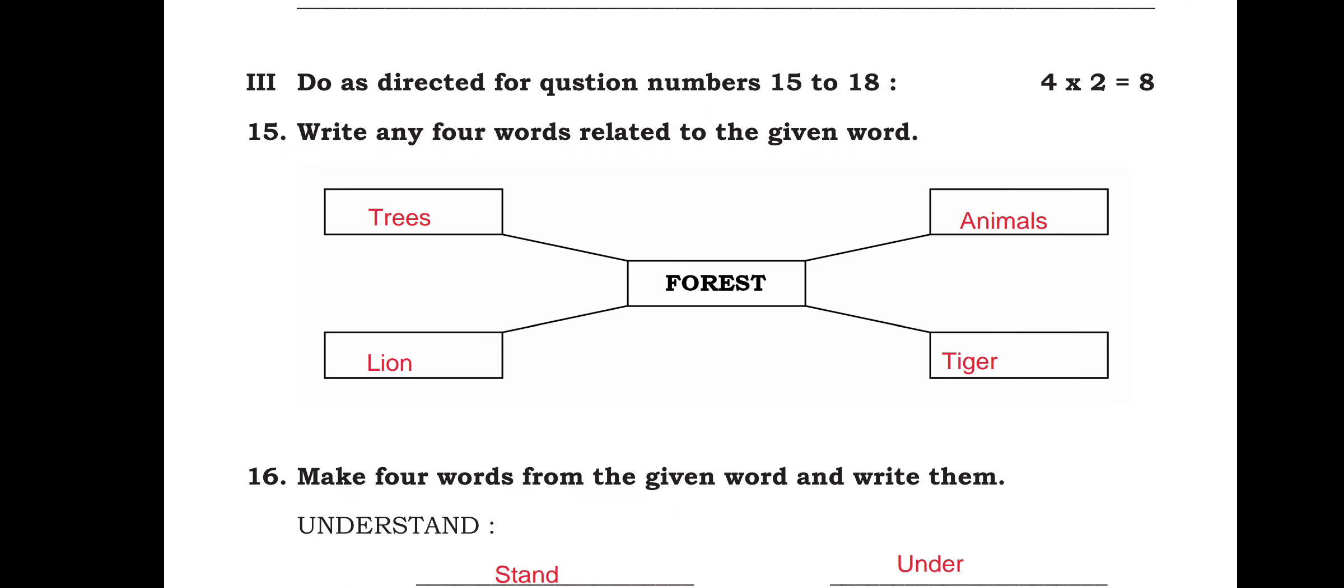Do as directed for the question numbers 15 to 18. Write any four words related to the given word. So forest, when you remember forest, what all things you can remember, which are the four words. So in the forest you see trees, lion, animals, tiger, river, water. You can write so many things.